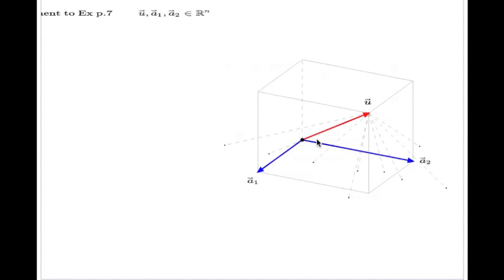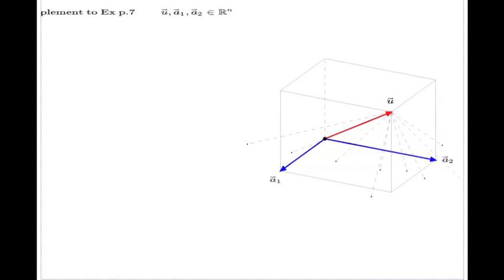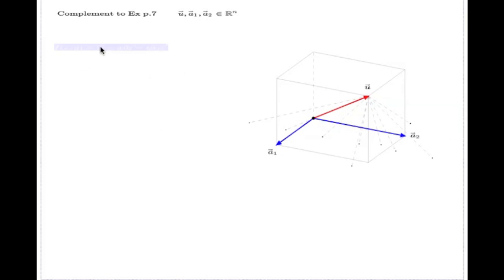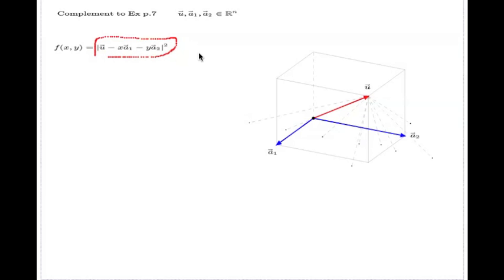I can test distances and ask which of those will be the shortest one. Analytically, we have to do the same thing we did last time. We have to look at a function — this time it will be a function of two variables, x and y. That function gives us the distance from the tip of vector u down to a particular choice of a point in the span of a1 and a2, depending on x and y. We have to minimize this function over x and y.